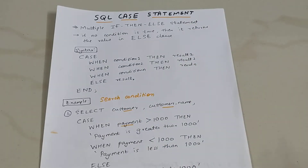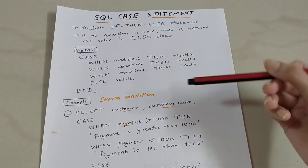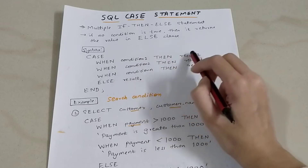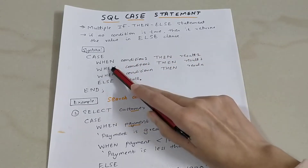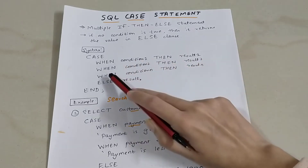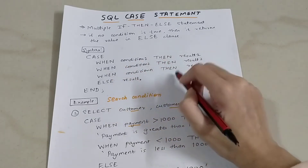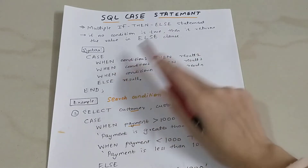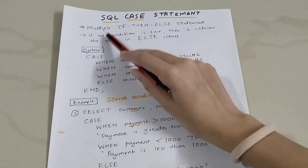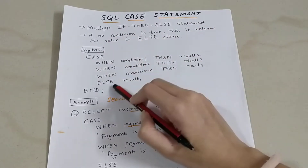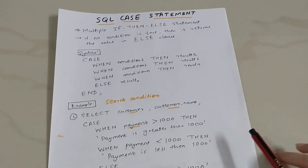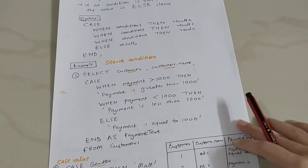It works just like multiple if-then-else statements. If condition 1 is true then result 1 is printed, else if condition 2 is true then result 2 is printed, else if condition N is true then result N is printed. If no condition is true, then it returns the value in the ELSE clause. So CASE is essentially a multiple if-then-else statement.